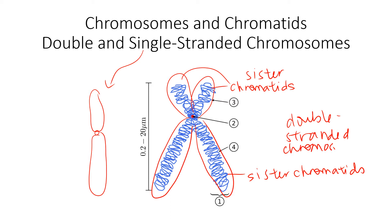We need to have this conversation because we're going to talk about separating the sister chromatids during mitosis or meiosis, and we have to have a replicated or double-stranded chromosome in order to do that.